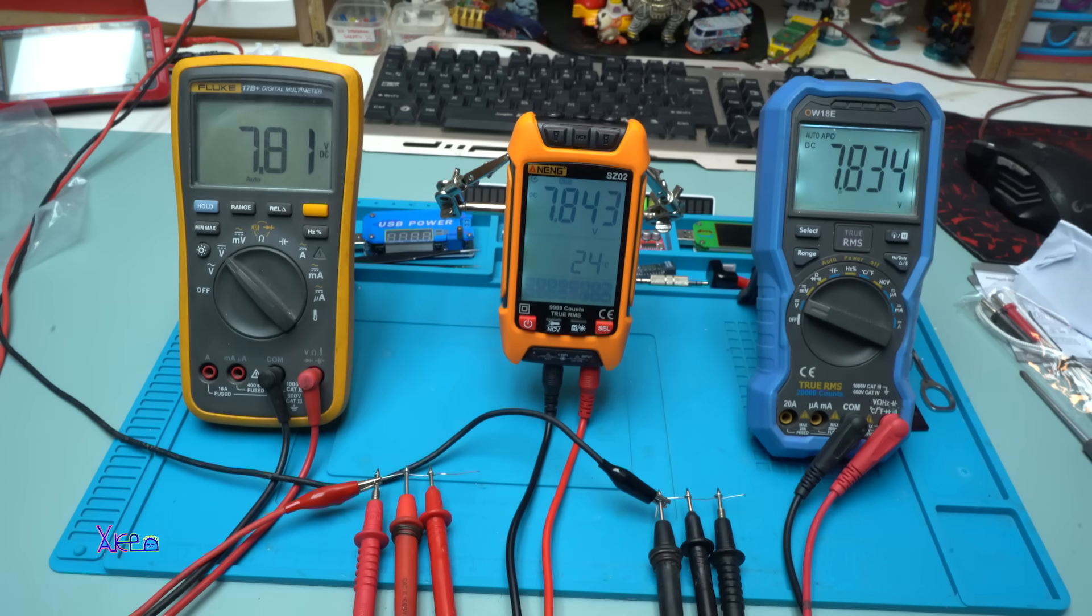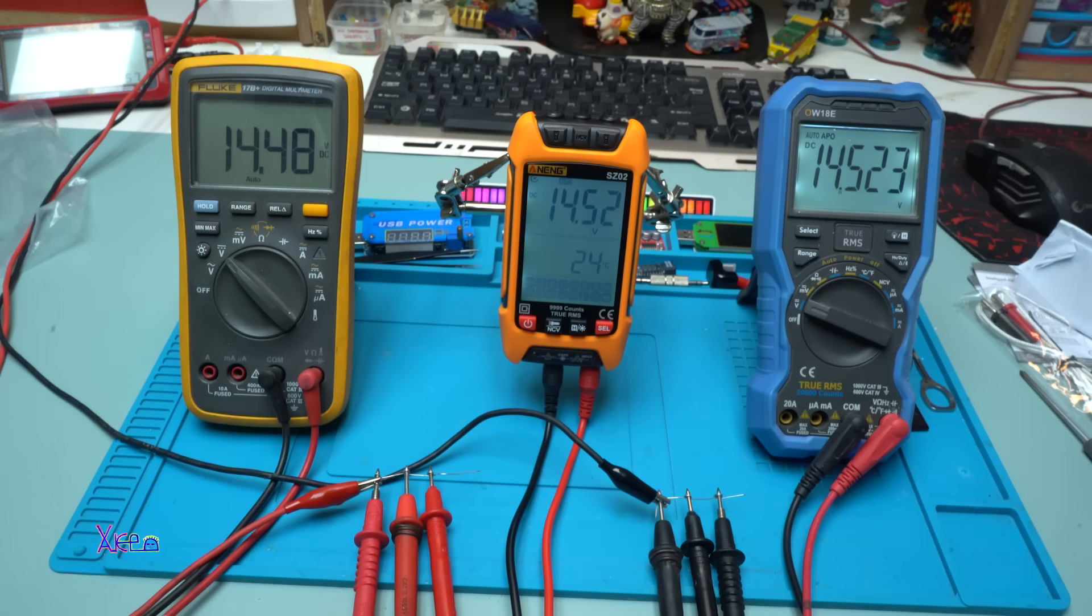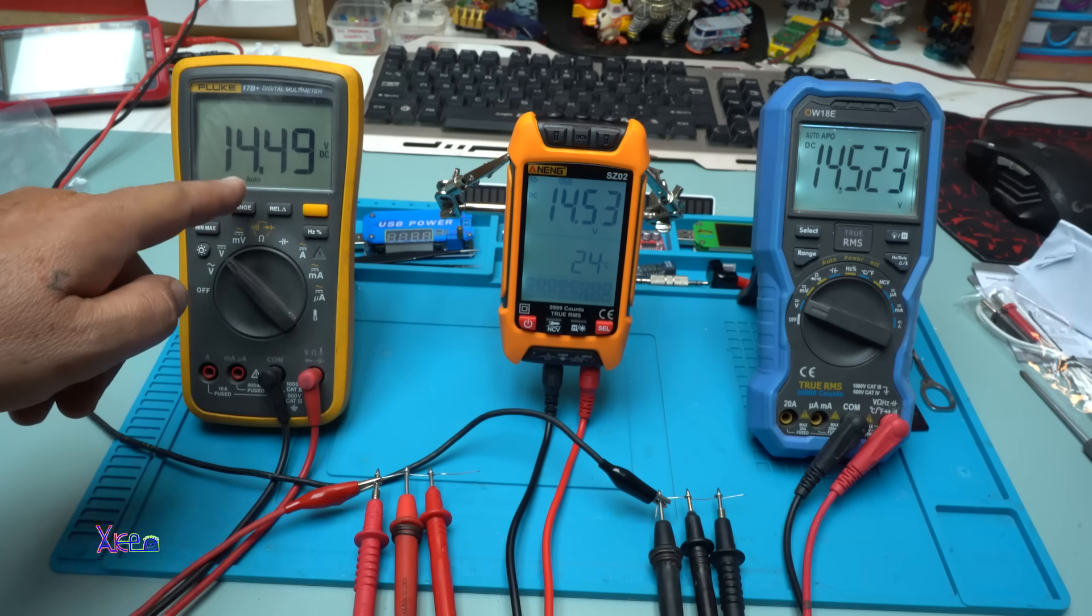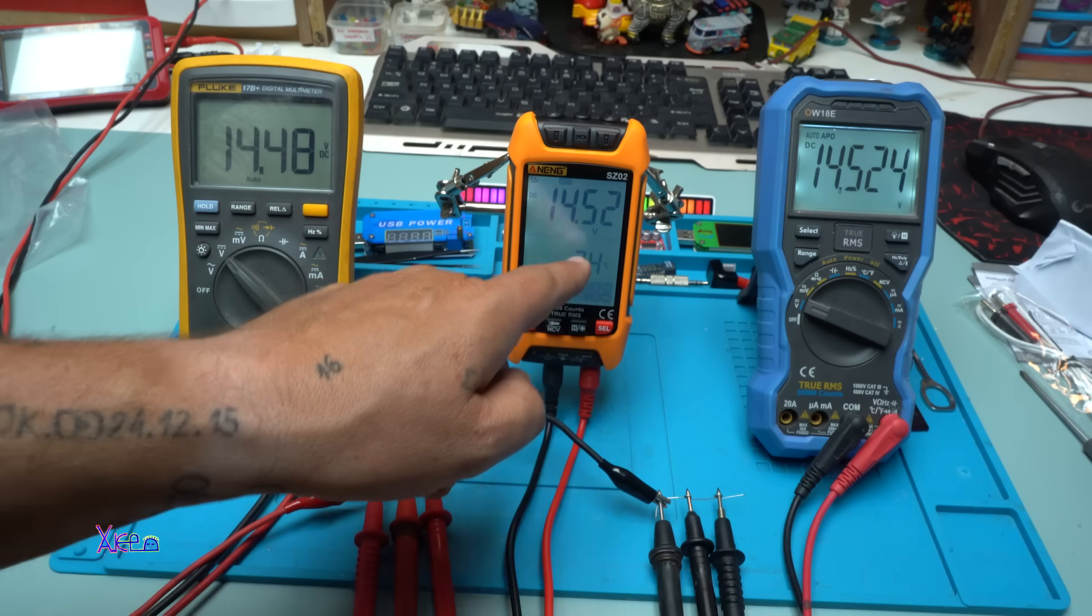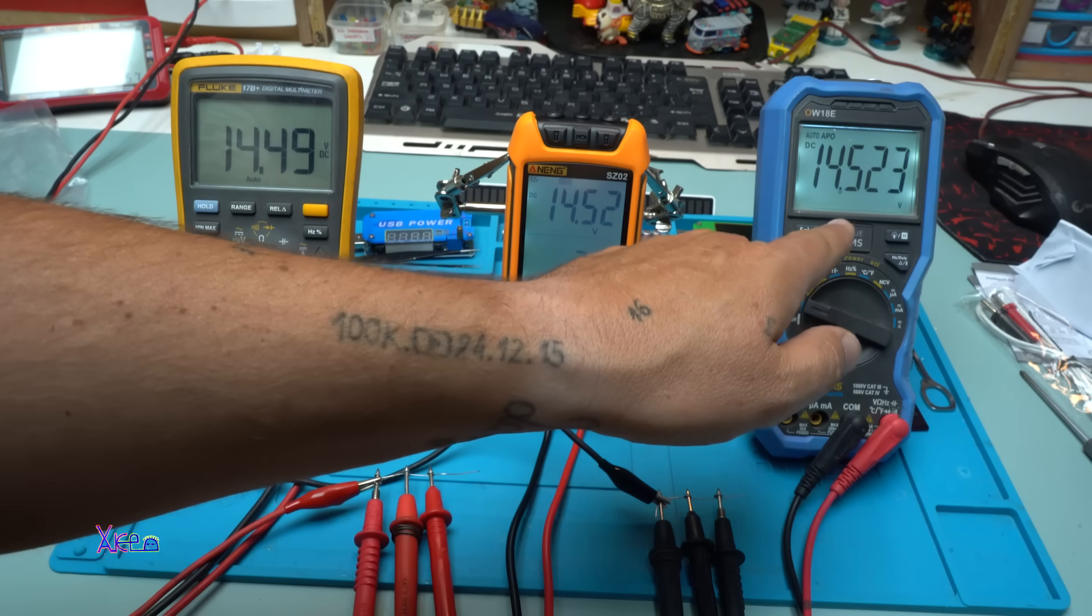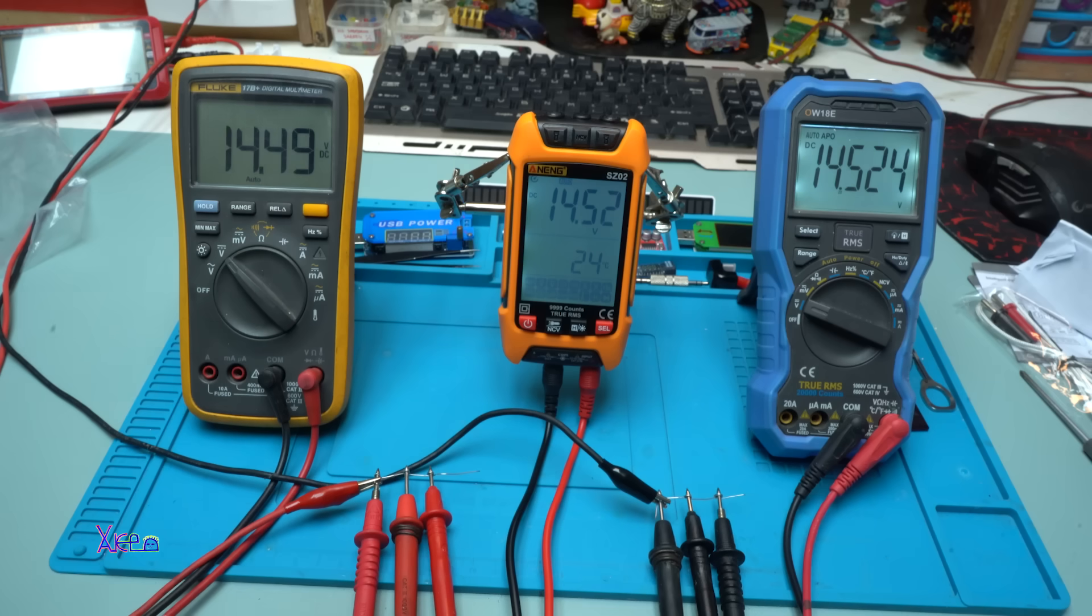Now I'm going to change the voltage to let's say, how much, 14.5 volts. 14.5 volts. Fluke 14.49. The new model 14.5. Great. And also this one 14.5. This is pretty accurate for a cheap AliExpress multimeter. I like it.